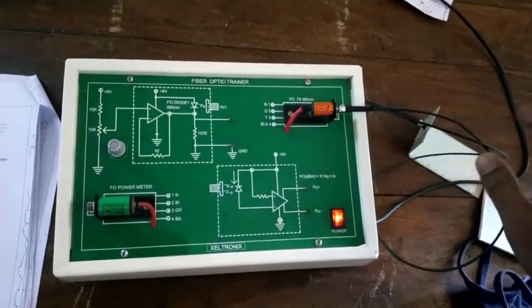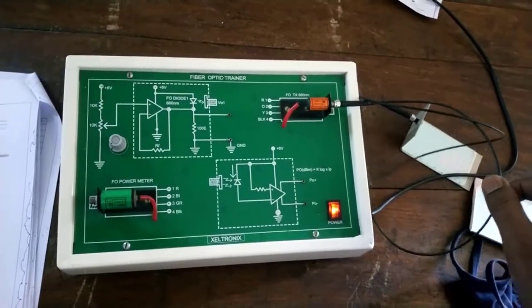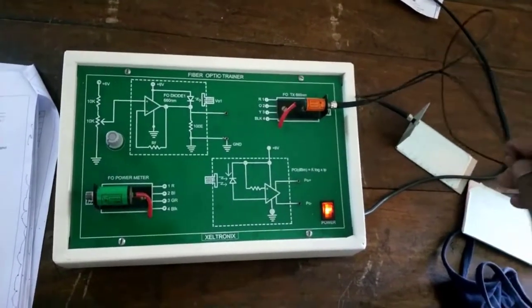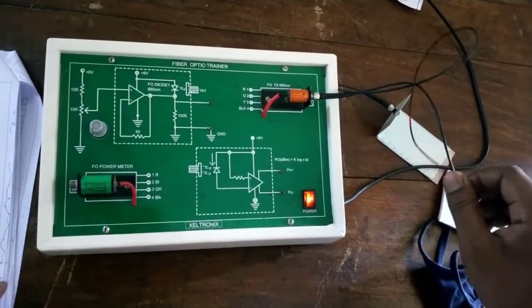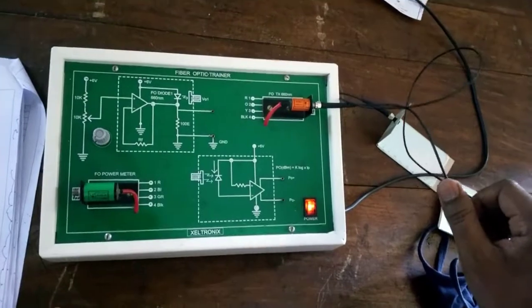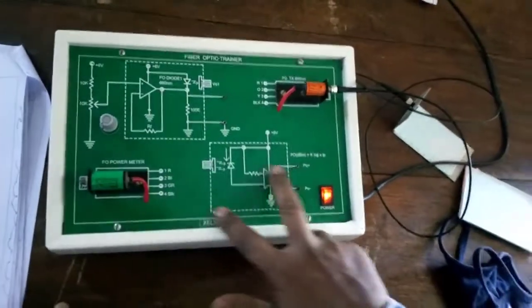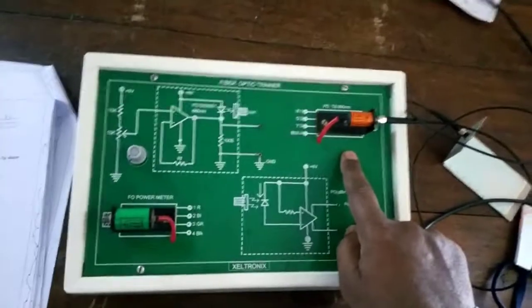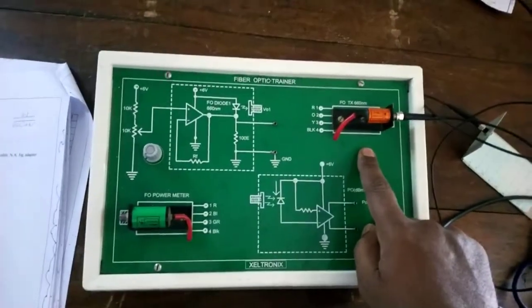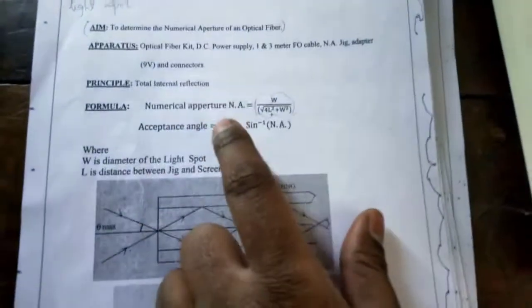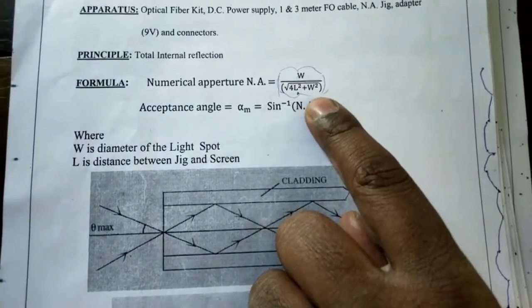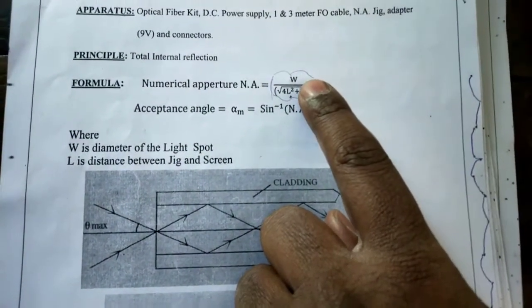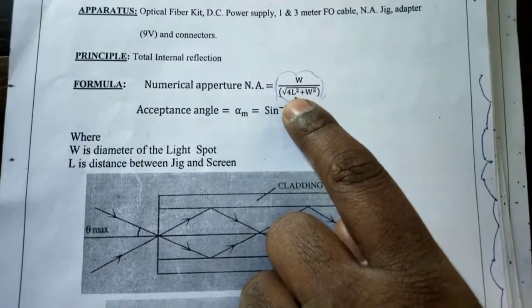It is a very simple procedure to find out the numerical aperture and acceptance angle of the optical fiber. We have two scales given here — one is for length and another is for diameter. We are using only the top circuit. The formula given in the manual for numerical aperture has two terms: w and l. W is the diameter of your light spot and l is the length on the scale.